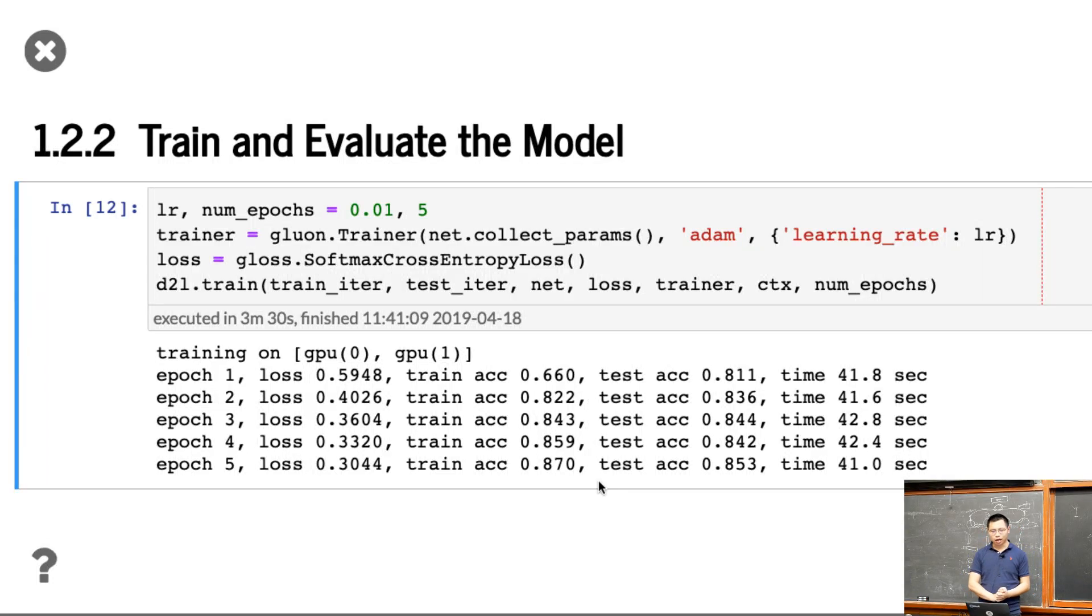Now we can try training. Because we're using fine-tuning, very similar to images before, we use a very tiny learning rate, 0.01, and a number of epochs like five, which is usually enough. If you have a large dataset, you can even use just one or two passes. We set up the learning rate, get a trainer, and use softmax cross-entropy loss. This is binary classification; you can use binary logistic regression loss, but for general purpose, in case you want to do multi-class text classification, we use softmax. You can see we train on two GPUs and the loss decreases. Because we're using fine-tuning, the training accuracy is not so bad at the beginning. Even after one epoch, you get decent test accuracy.